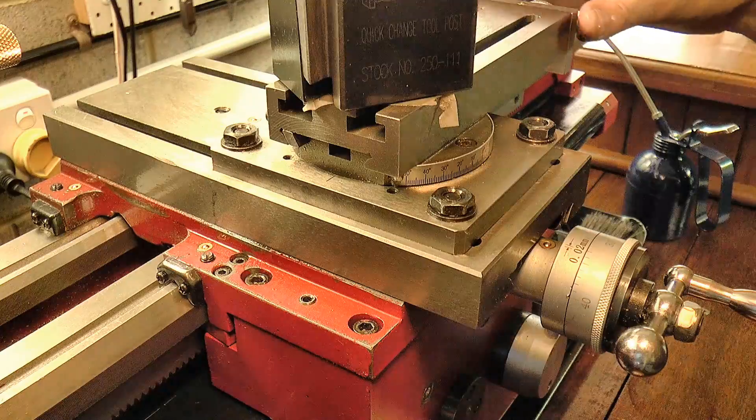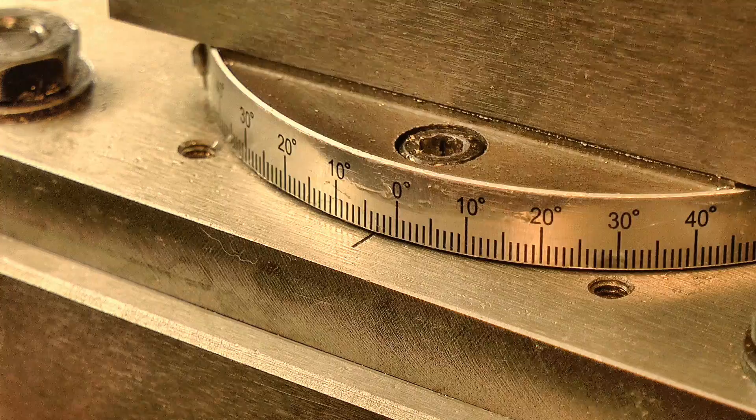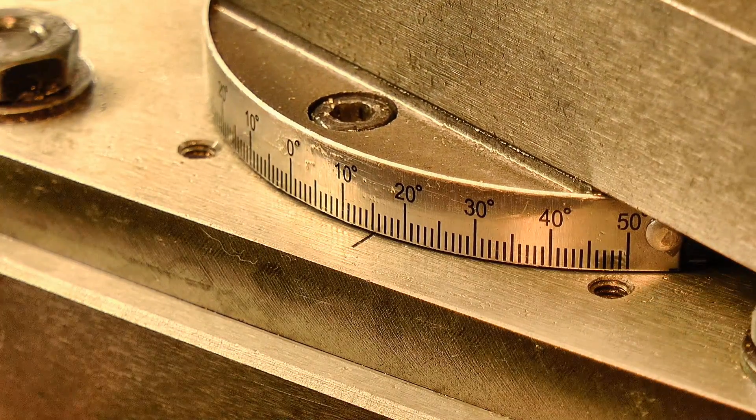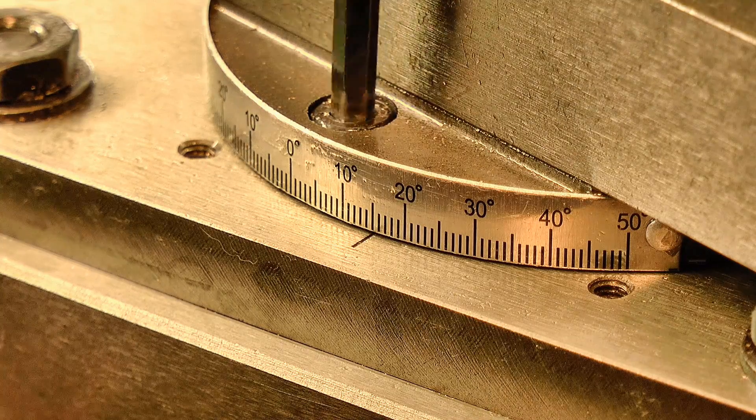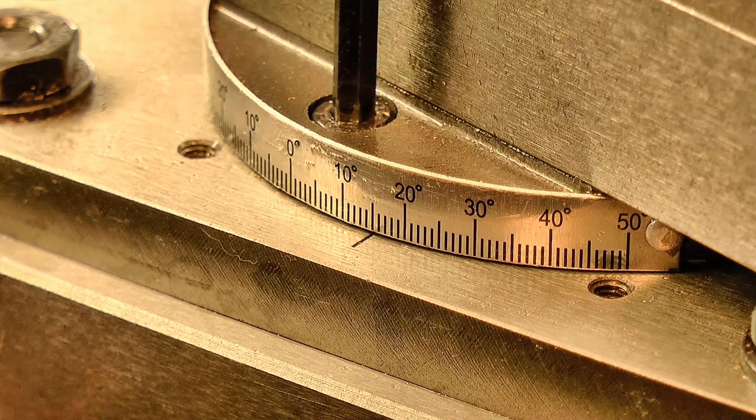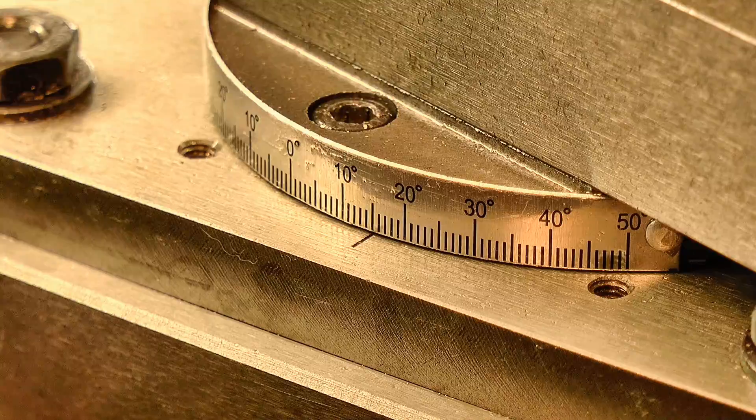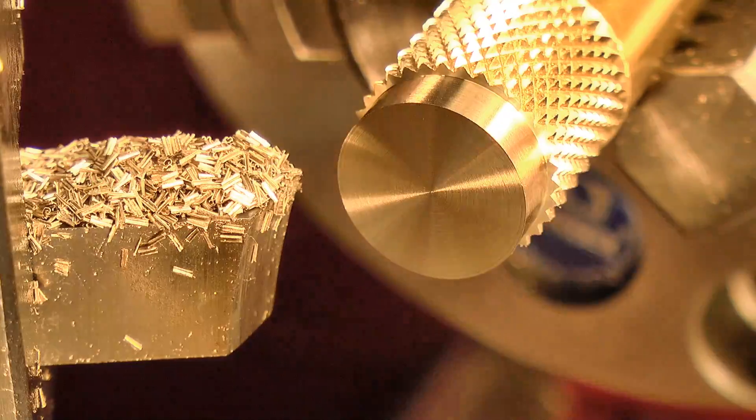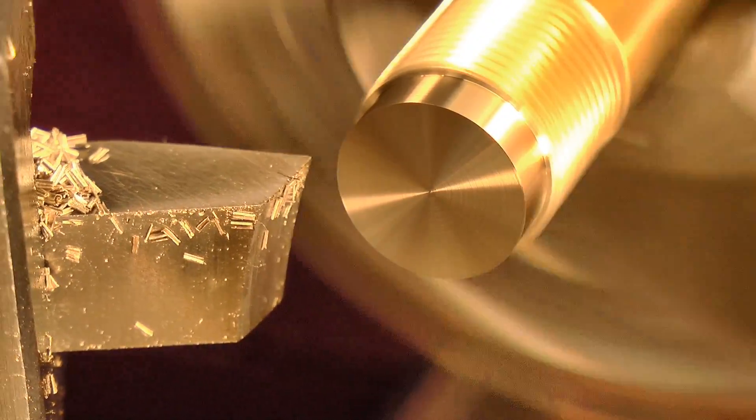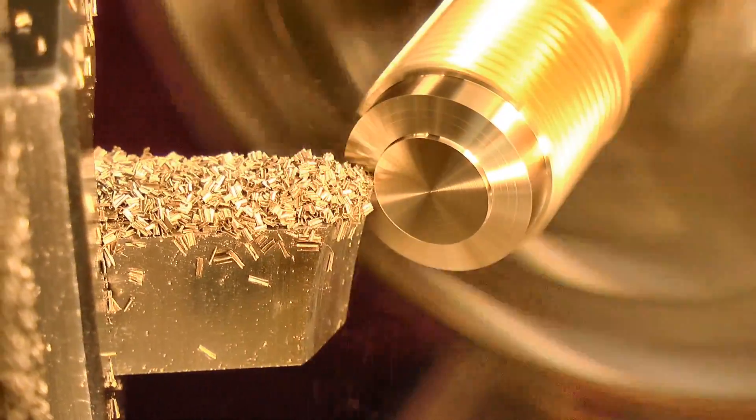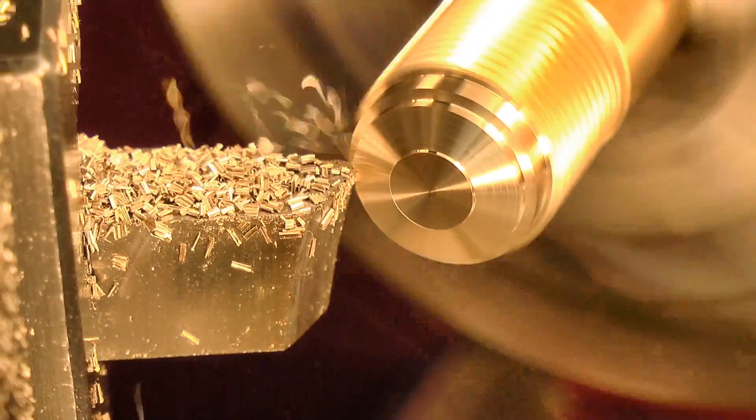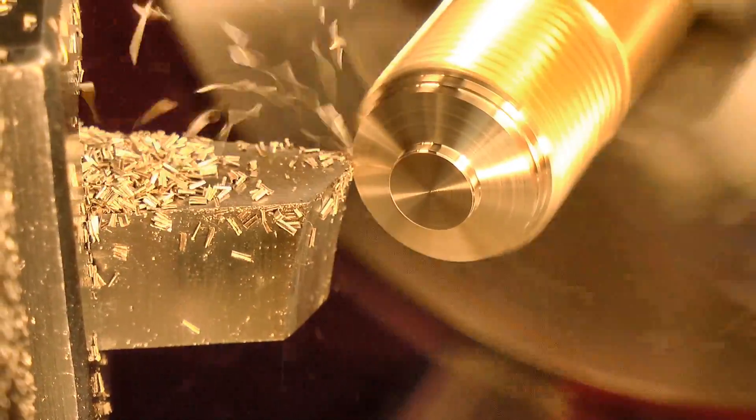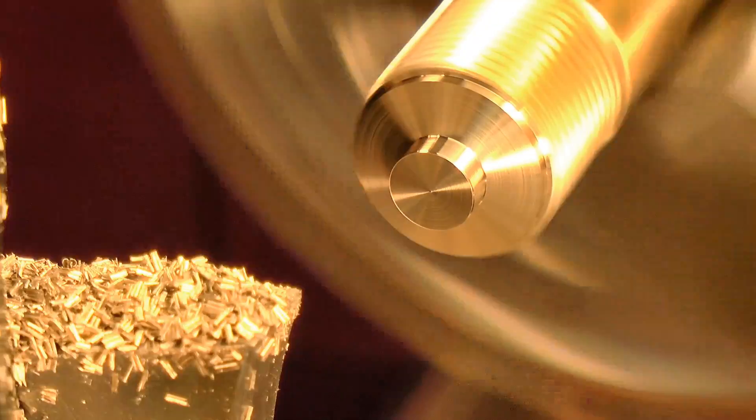Now this is where this part deviates from the previous. For this part, I'd like a cone shape on the end. So I've set the compound off at an angle, and I'll face to length with the crosslide, and then cut the taper feeding in with the compound. You can see I'm forming a little boss on the end, into which I'll drill and tap a hole that will soon accept the threaded rod.